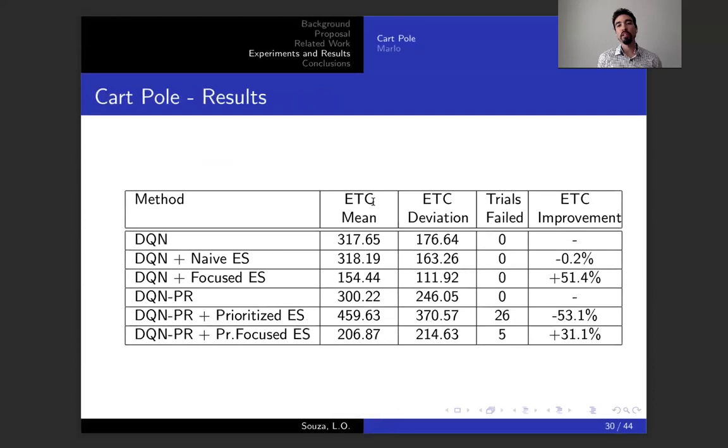The results we have here. ETC is the number of episodes you take to complete a task. In regular DQN, the agent takes around 300 episodes to complete this task. In the setup we had, if you add naive experience sharing, you still take about the same amount of time. But if you add the focus experience sharing approach, you can reduce that to about half the time. Even though you are not sharing a lot of experience, the number of experiences shared was small. But since you're only sharing selectively focused experiences that would help the agent improve its policy, you get this major improvement here.